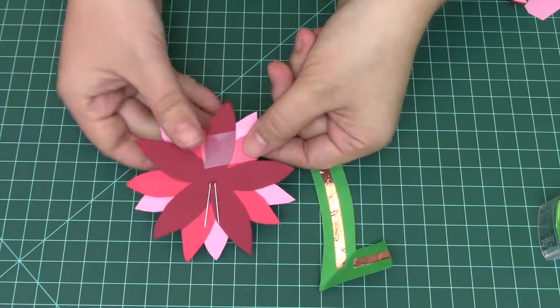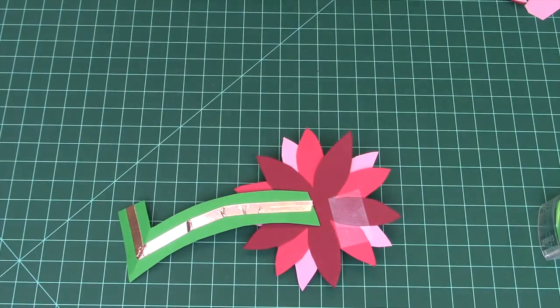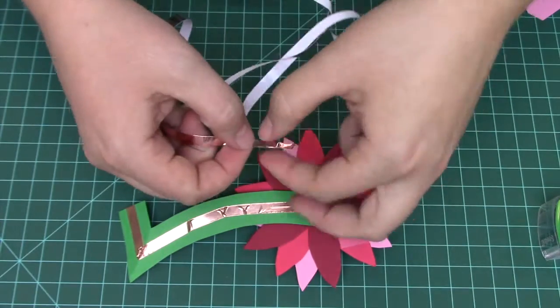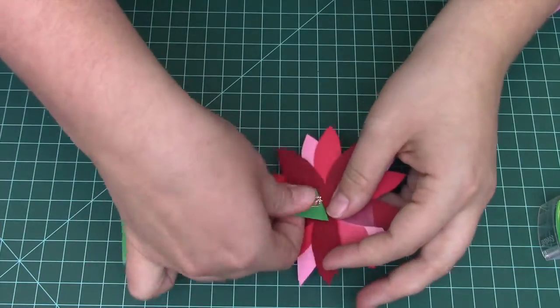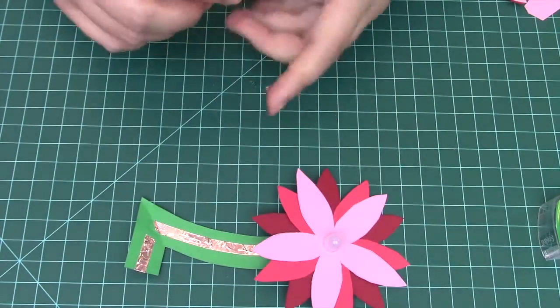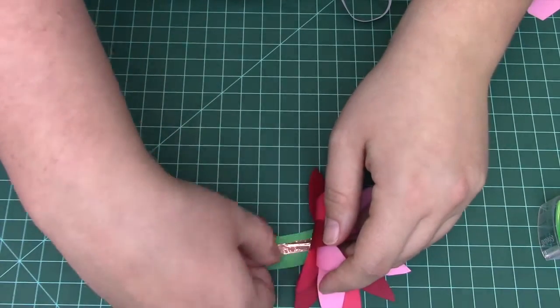Notice one LED leg is longer than the other. This one we will put on the back of our stem. Get a small strip of conductive tape, and secure the long leg to the back of the stem. Then flip it over, and do the same thing on the front. This copper sandwich will make a nice electrical connection.